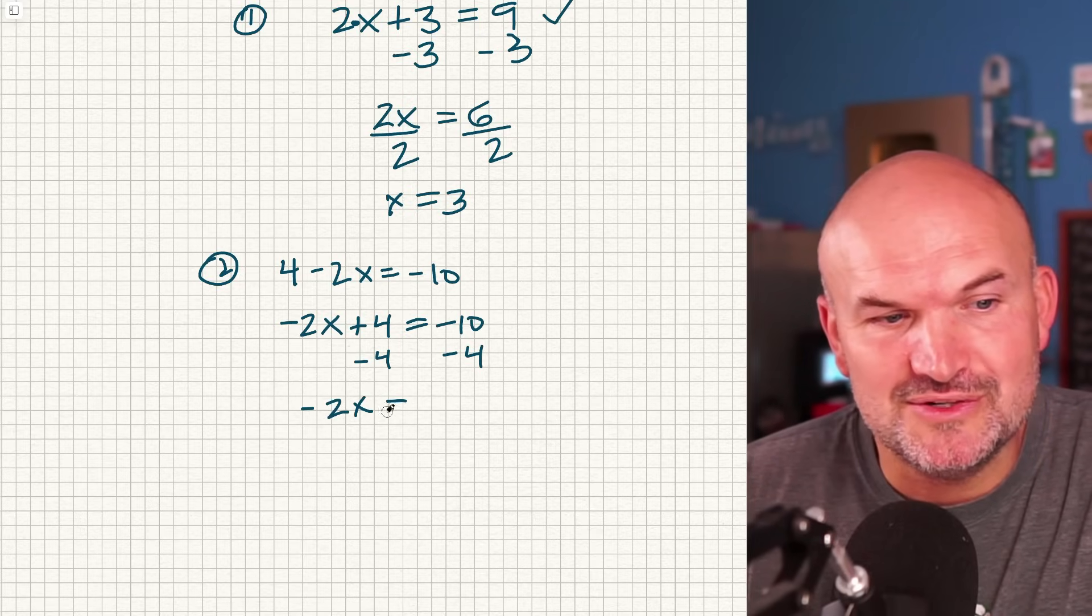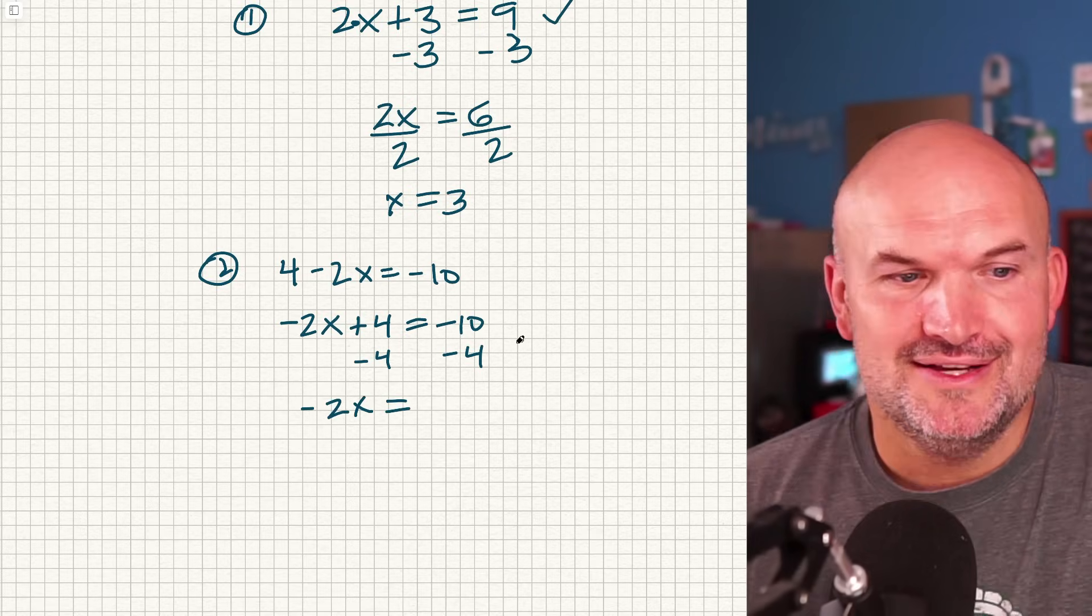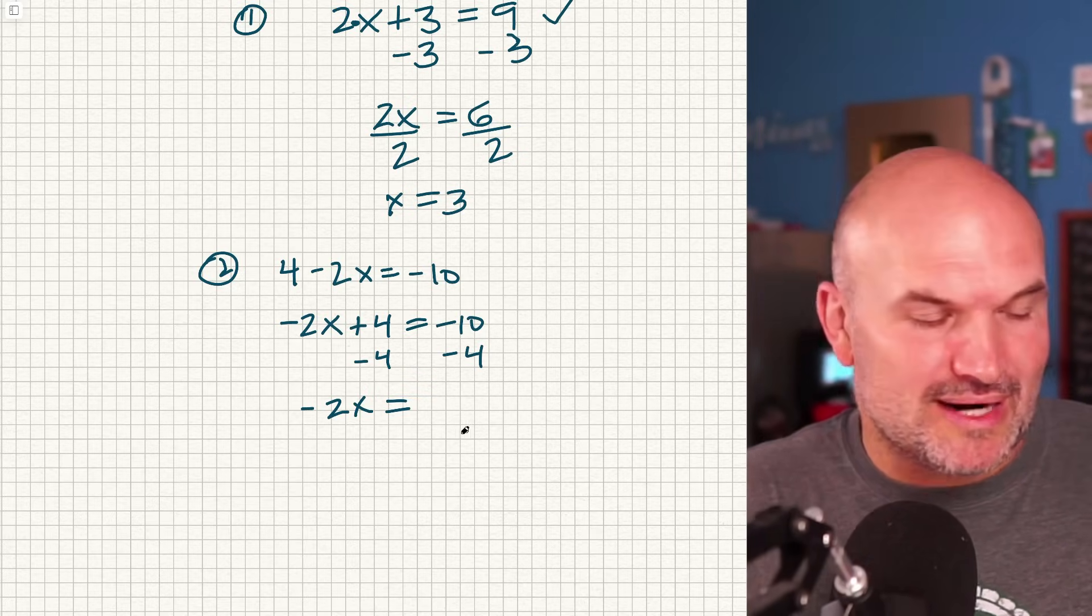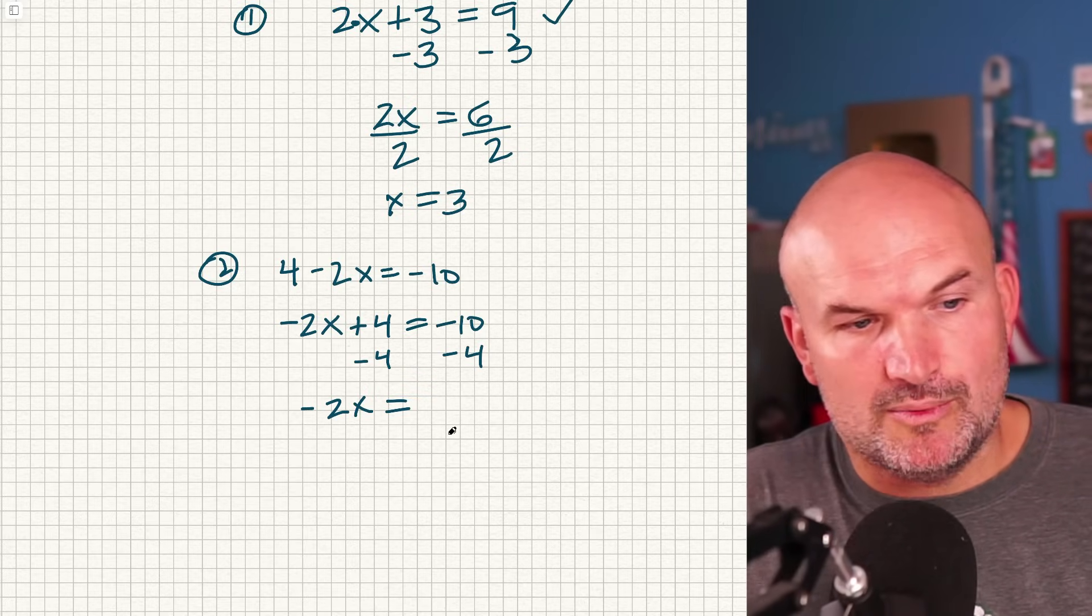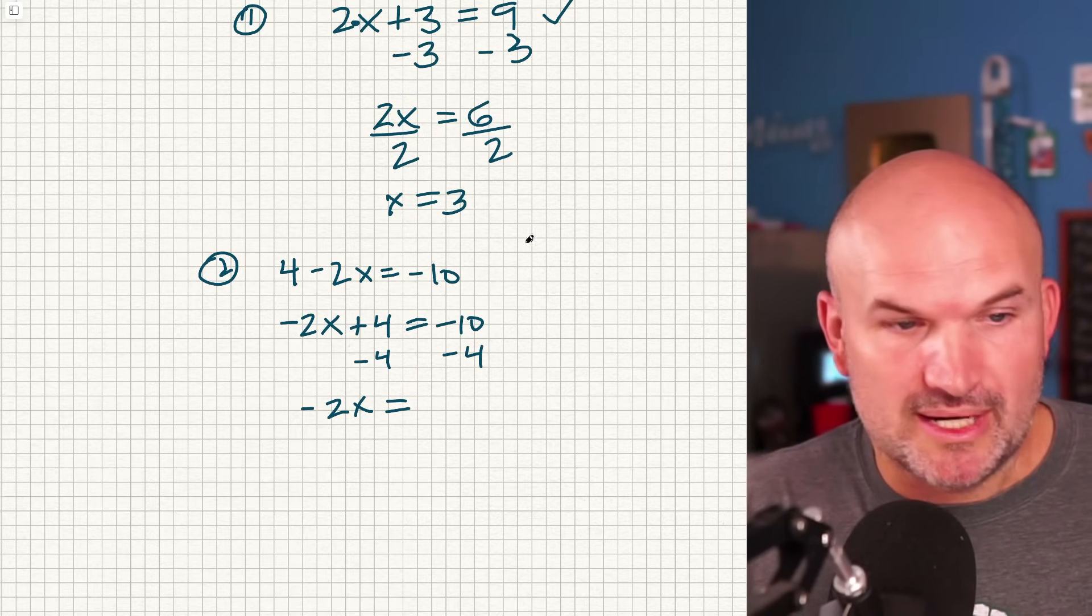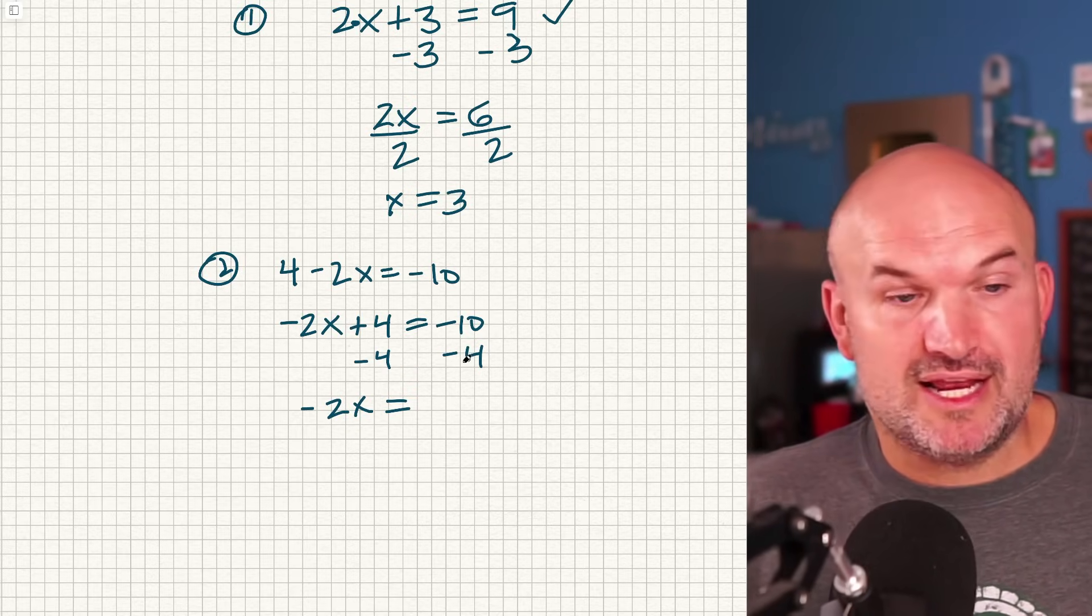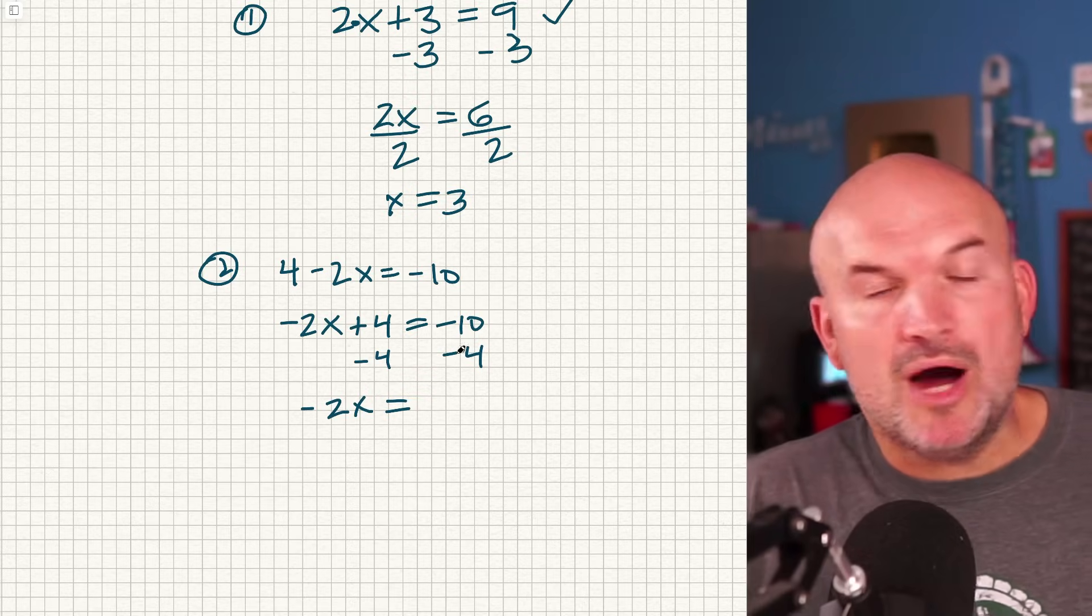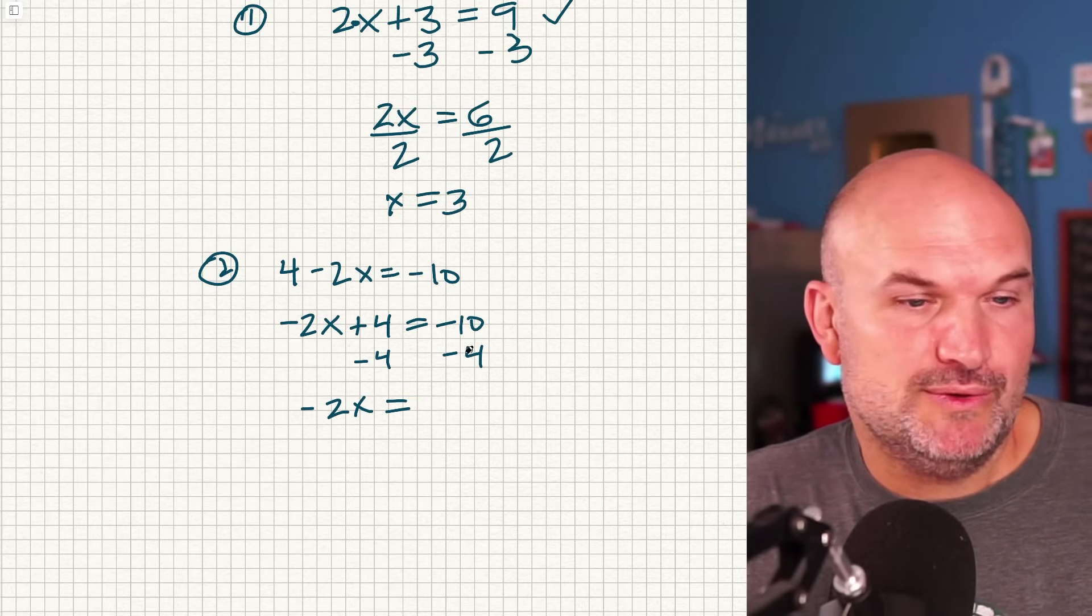Now again, the negatives get students confused all the time. So -10 - 4. So what I always like to tell students is when we're dealing with negatives, a lot of times just think of it as money. Negative means you owe me money and subtracting would be like borrowing more money. So let's say you owe me $10 and you're going to borrow four more dollars. How much money do you have?